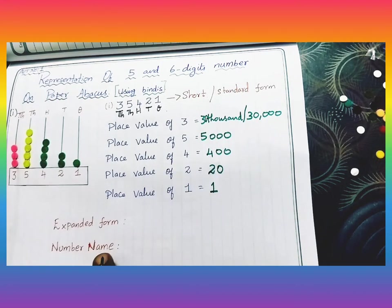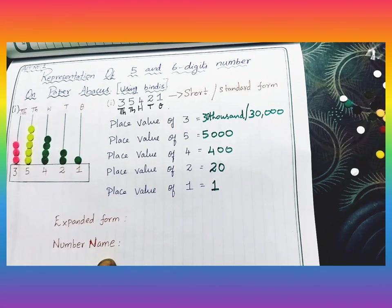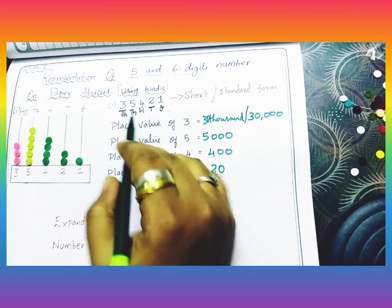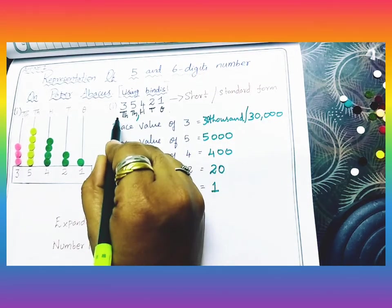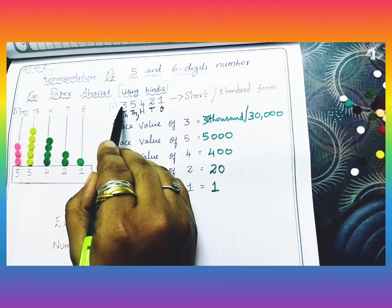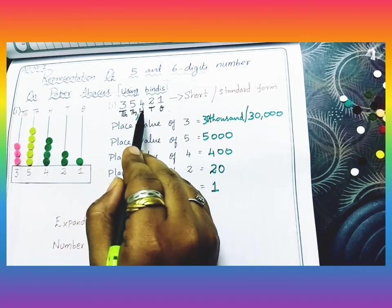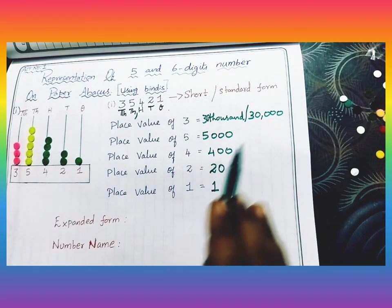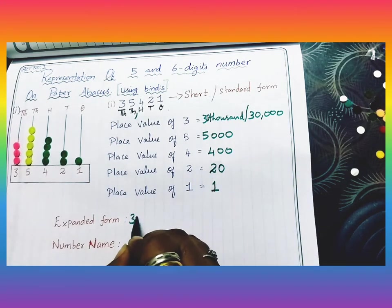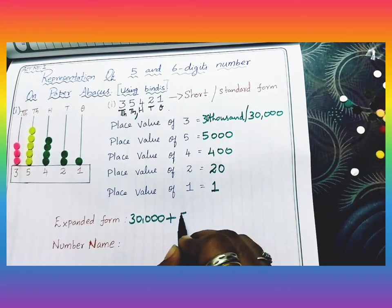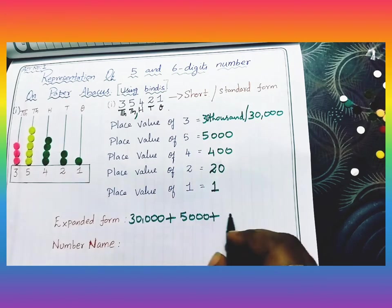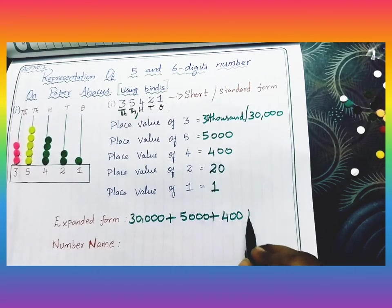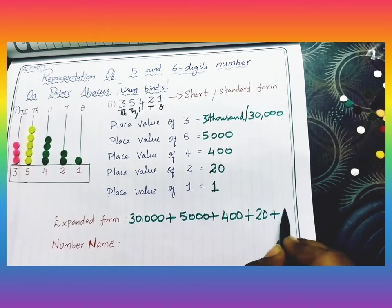Based on finding the place values, we are going to write the expanded form and number name. You all know the family names — ones, tens, hundreds are one family; thousands and ten thousands are the other family. The number name is thirty-five thousand, four hundred and twenty-one. The expanded form is: thirty thousand plus five thousand plus four hundred plus twenty plus one.